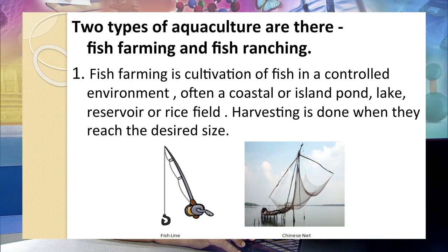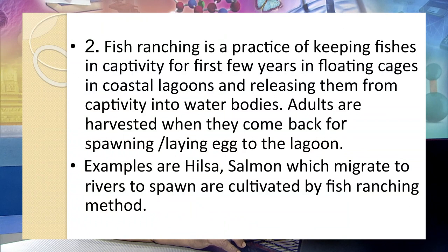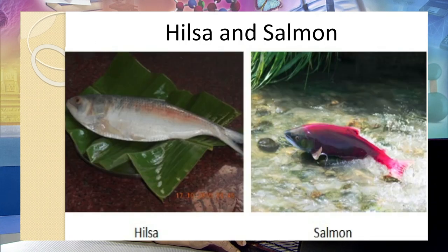Fish farming is cultivation of fish in a controlled environment — often a coastal or island pond, lake, reservoir, or rice field. Harvesting is done when fish reach the desired size. Fish ranching is the practice of keeping fish in captivity for a few years in floating cages in coastal lagoons and releasing them into water bodies. When adults come back for spawning, they are caught. Examples include hilsa and salmon cultivation.